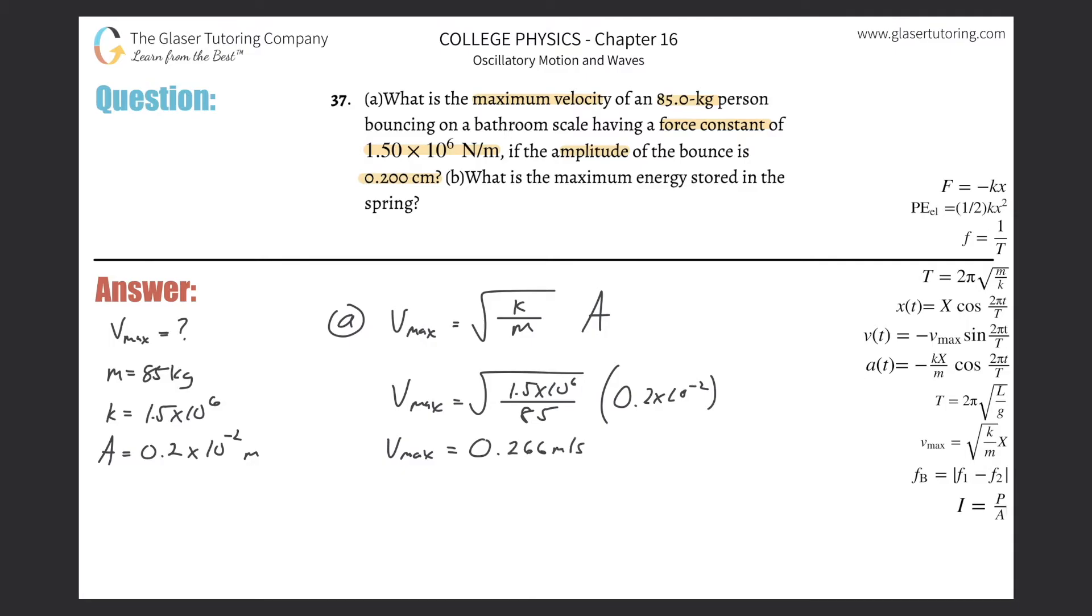Now let's look at letter B: What is the maximum energy stored in the spring? The formula for potential spring energy is on the right hand side. The potential energy in the spring equals one half multiplied by the force constant multiplied by the displacement squared.